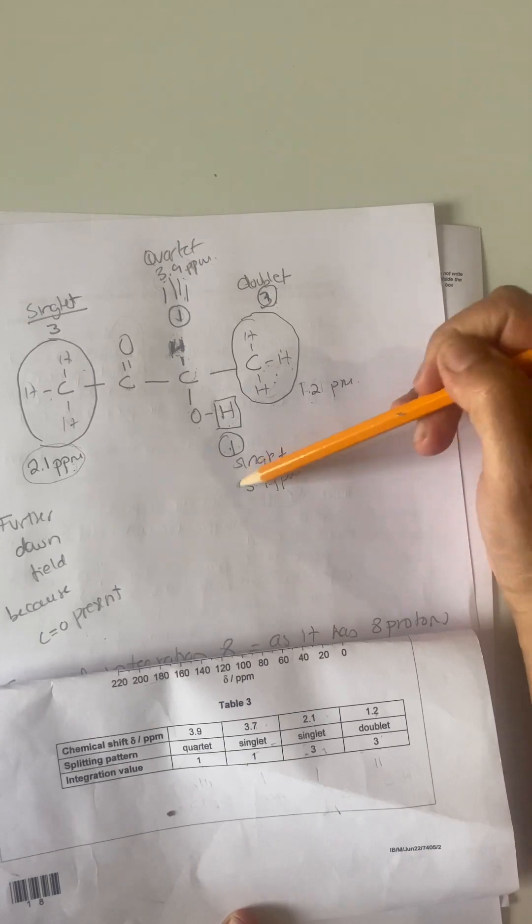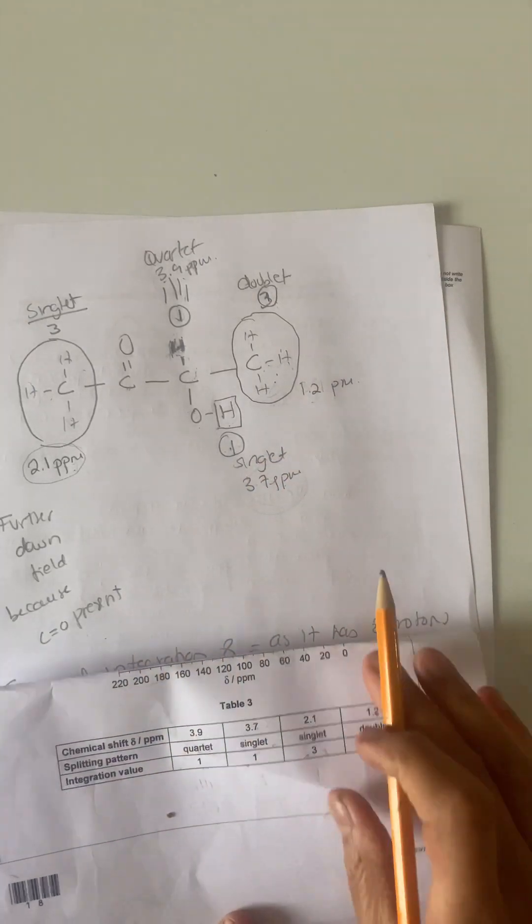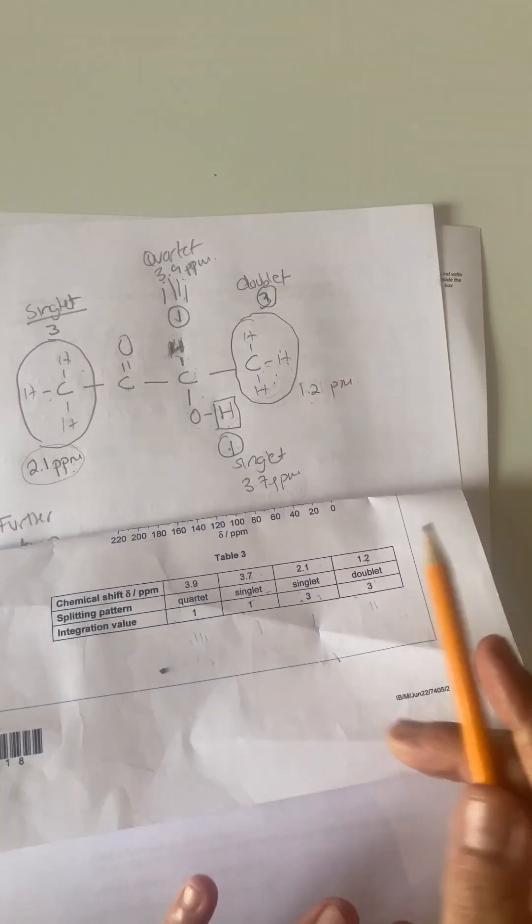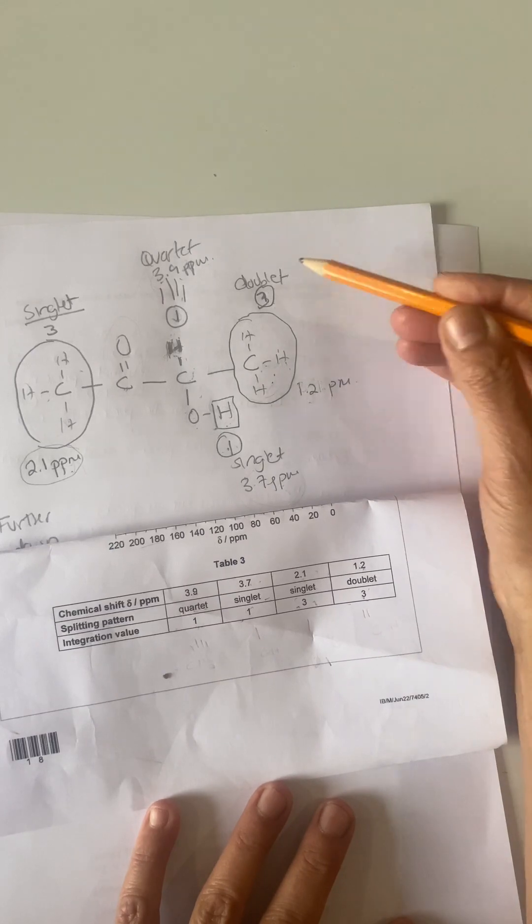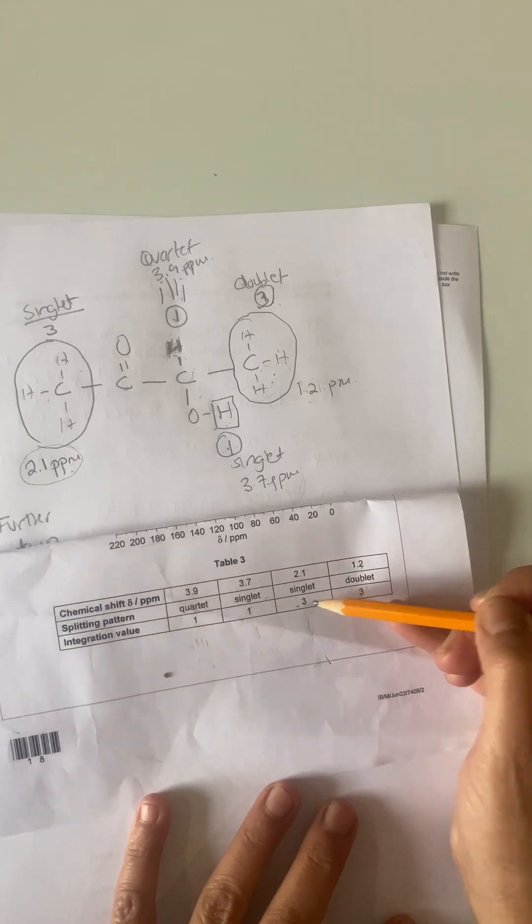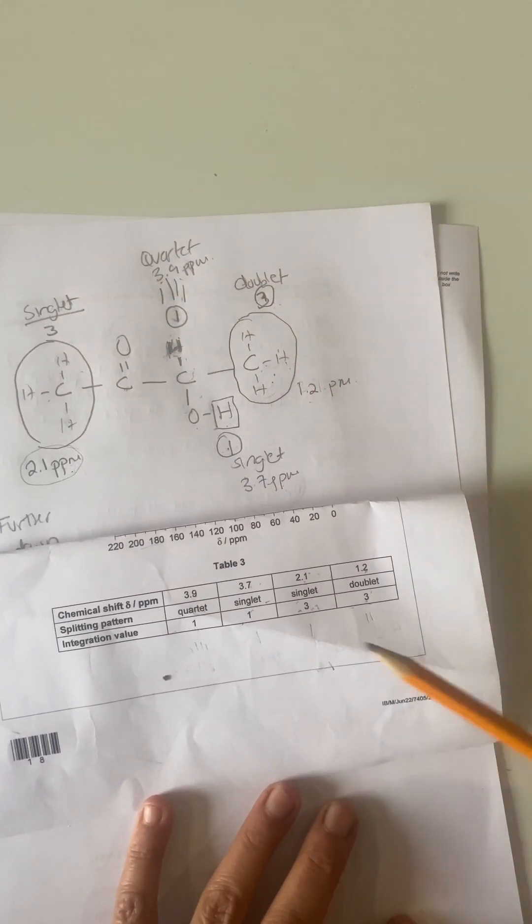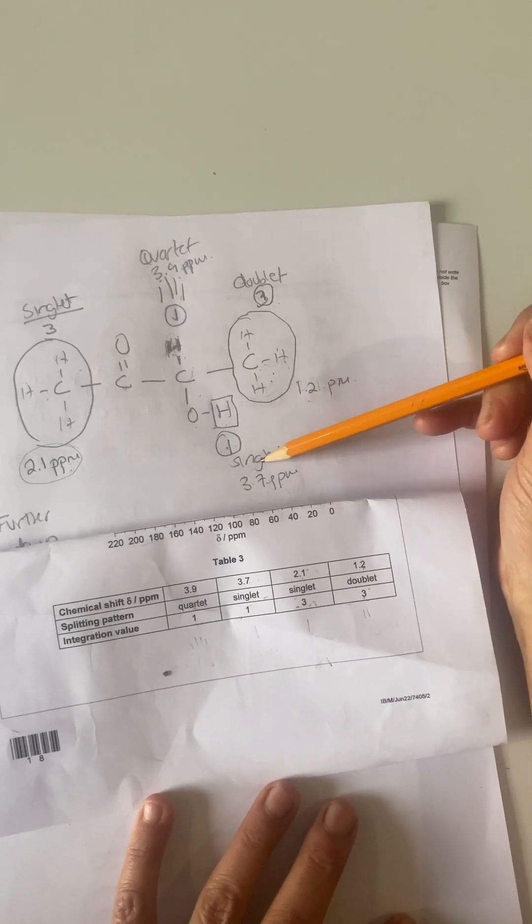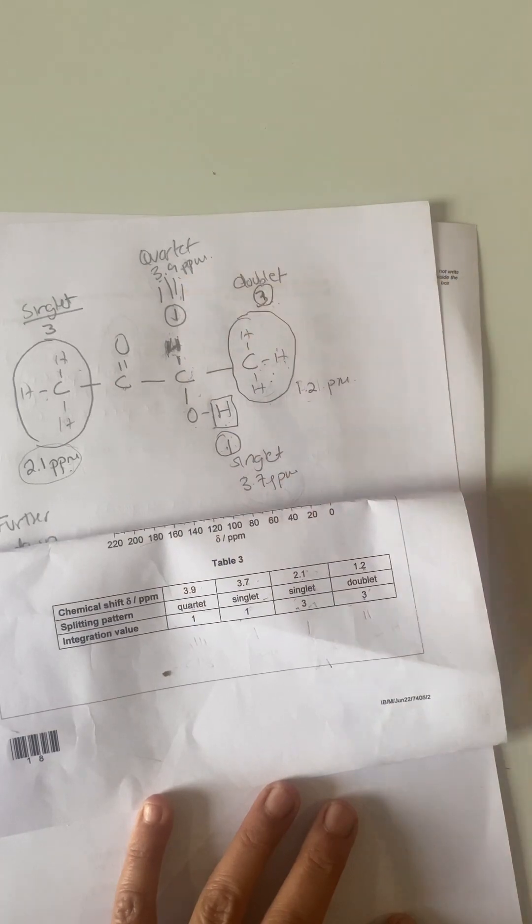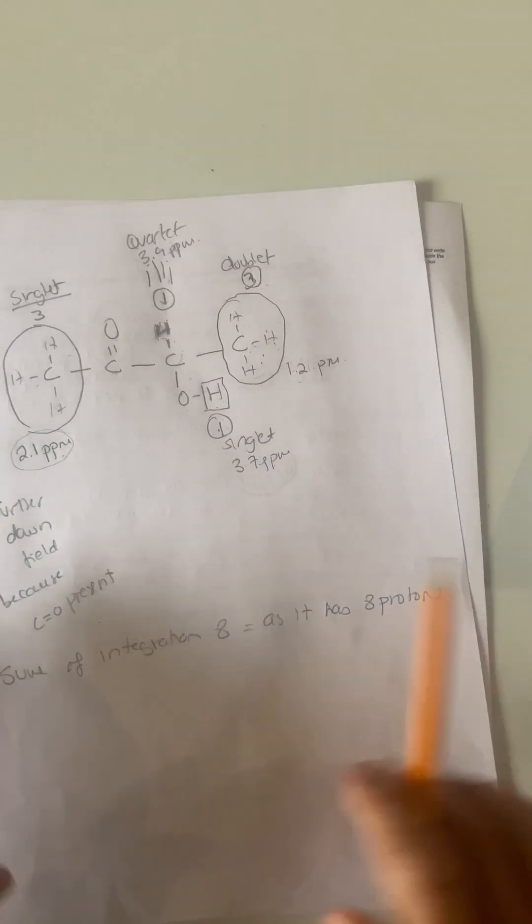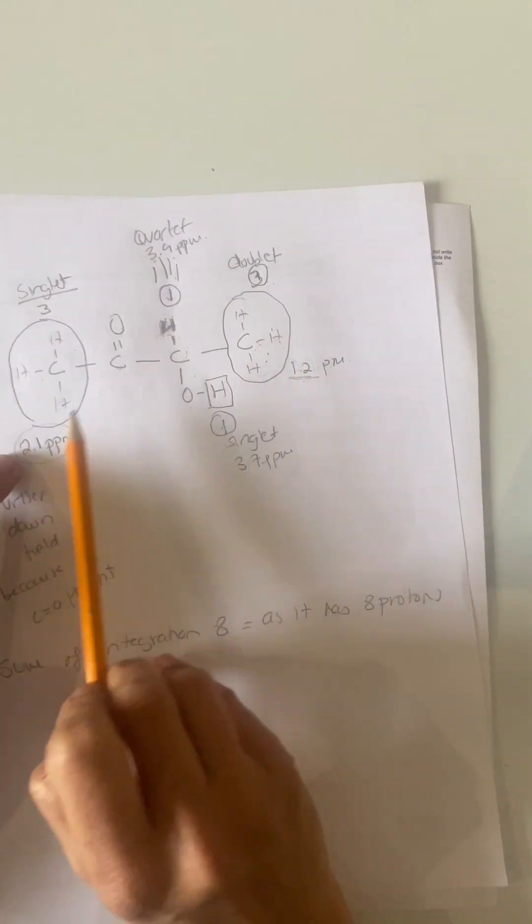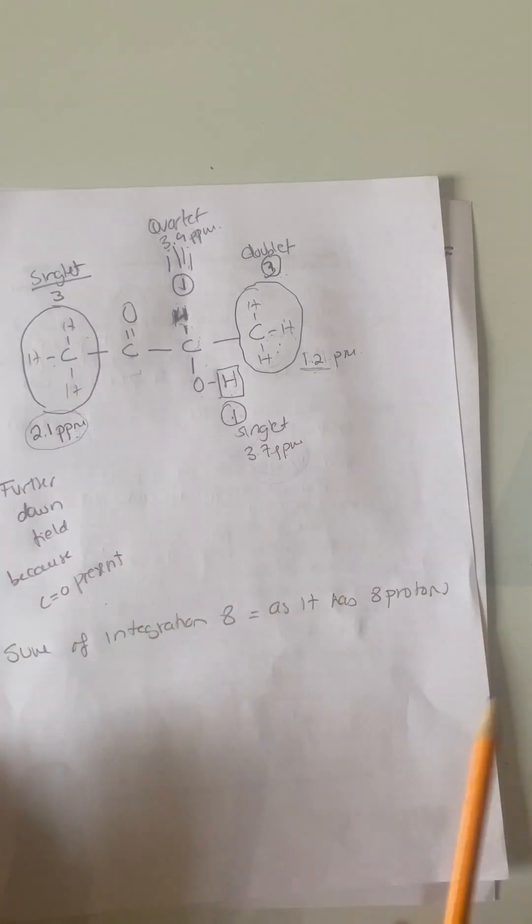And that's going to be at 3.7. This is attached to a C=O, therefore it's going to be at that point there. You can look at your data booklet and you see where it comes up. So if you look at those structures and those values there, they do match up. You've got here 1.2 doublet integration three, 2.1 singlet integration three, 3.7 singlet integration one, and then you have 3.9 quartet integration one. And this CH3 is further downfield than that because it's attached to a C=O, that's why it goes further downfield.